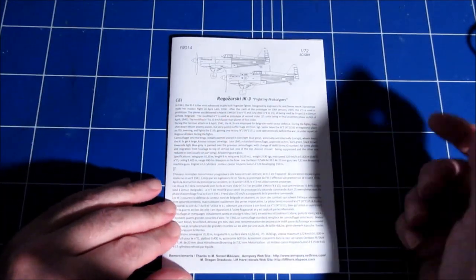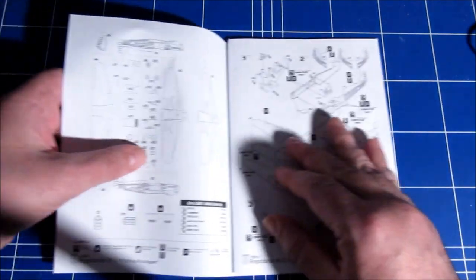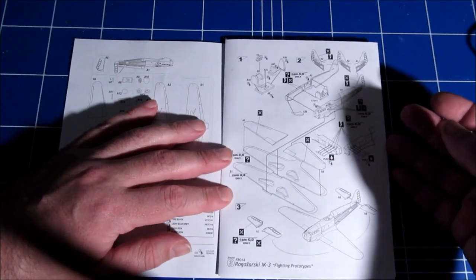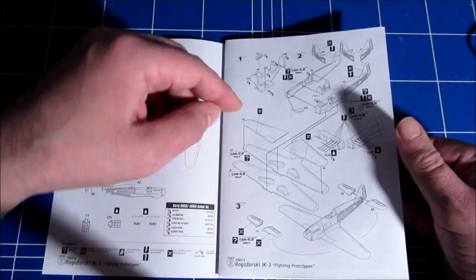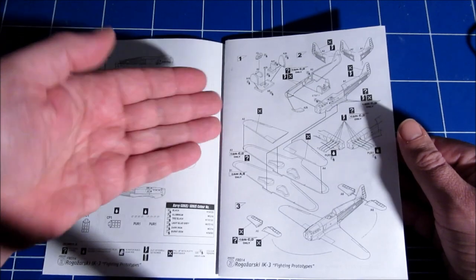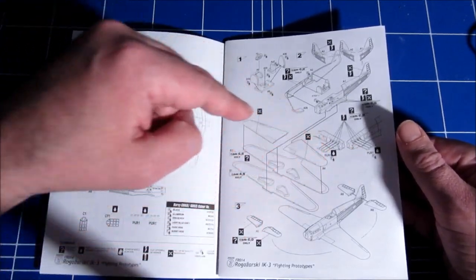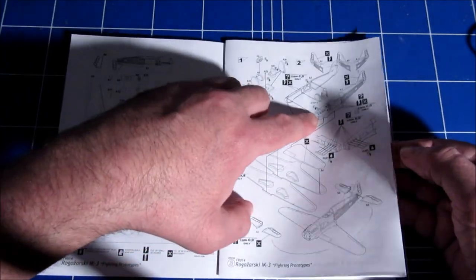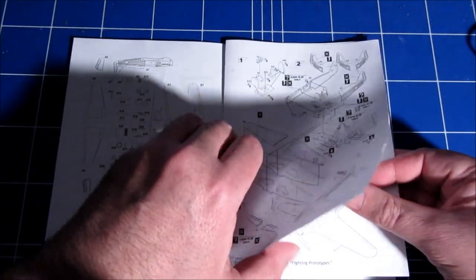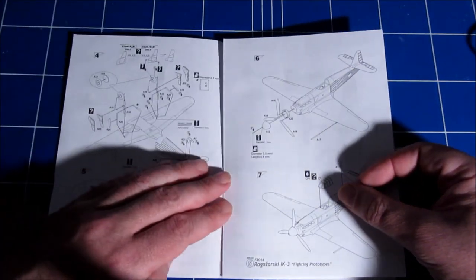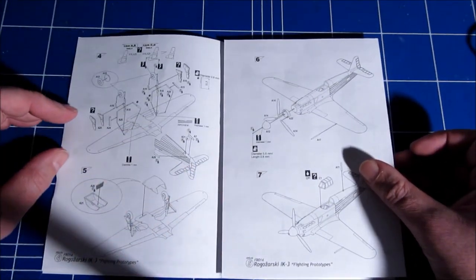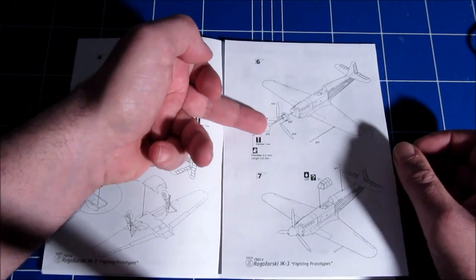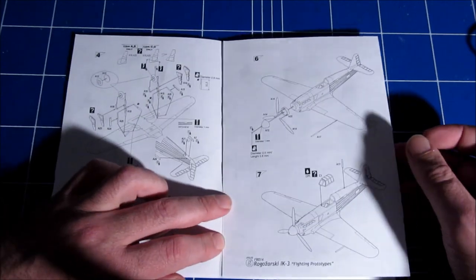Instructions. Story in English, story in French. The sprue map, always handy. And the building instructions themselves. You have to of course take care which version you want to choose because there's a lot of optional parts with the resin exhaust pipes and the underwing and parts that you have to cut off, either depending on which version you want to make.